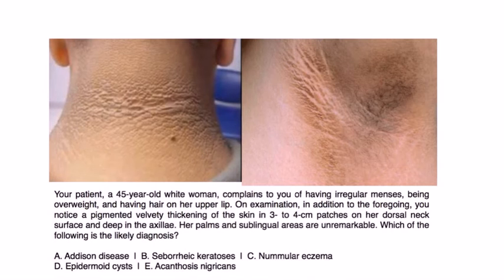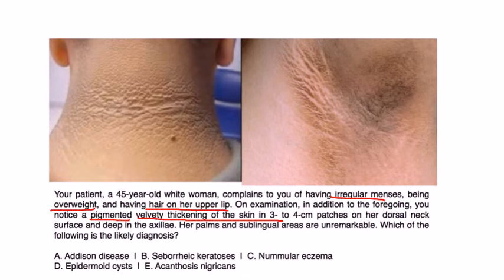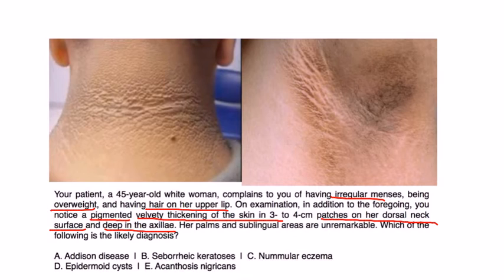Practice question: A 45-year-old white woman complains of irregular menses, being overweight, and hair on her upper lip. On exam, you notice a pigmented velvety thickening of the skin with 3-to-4 centimeter patches on her dorsal neck and deep in the axilla. Her palms and lingual areas are unremarkable. The description — velvety, hyperpigmented, back of neck, and axilla — is very characteristic. The most likely diagnosis is acanthosis nigricans.